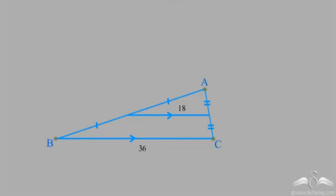Let us recall the mid-segment of a triangle. What is a mid-segment of a triangle? If I have a triangle and I take midpoints of any two sides — say the midpoint of side AB and the midpoint of side AC, which divides it into two equal parts — then if I join these two midpoints I get a mid-segment. Now let's recall the mid-segment theorem.